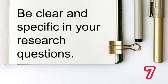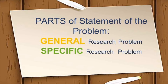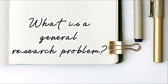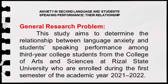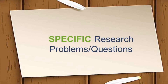The SOP has two parts: the general research problem and the specific research problem. The general research problem is the opening statement in your SOP that is usually based on your research title. Taking this correlational research titled 'Anxiety in Second Language and Student Speaking Performance: Their Relationship' as an example, we could have this general research problem: 'This study aims to determine the relationship between language anxiety and student speaking performance among third-year college students from the College of Arts and Sciences at Rizal State University who are enrolled during the first semester of the academic year 2021–2022.' The second part of the SOP are the specific problems, which — unlike general problems stated in statement form — are written in question form.